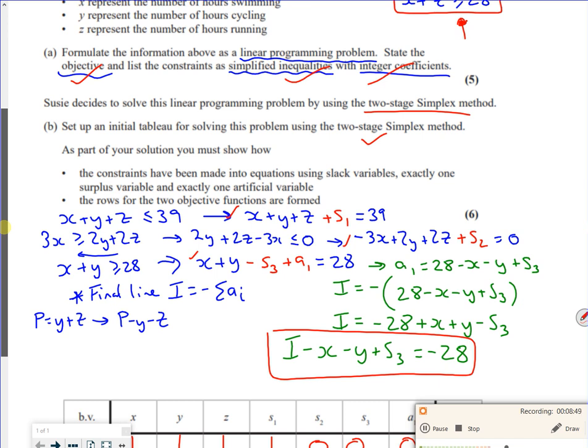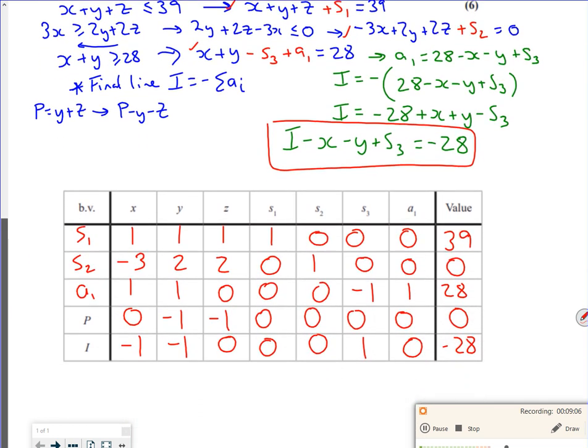We must show how the constraints have been made into equations using slack variables, exactly one surplus, and exactly one artificial variable. The rows for the two objective functions are formed. Yeah, that's everything there. So I hope that's helpful. Right, see you later. Bye-bye.